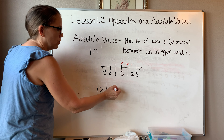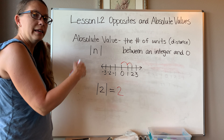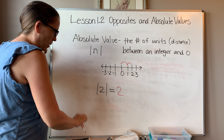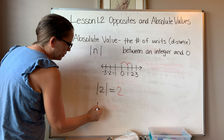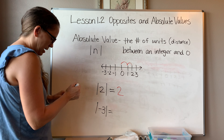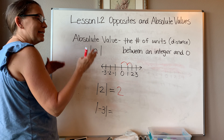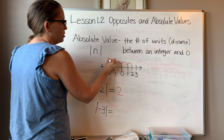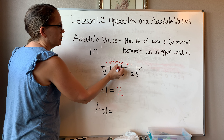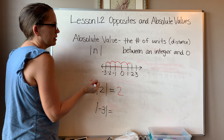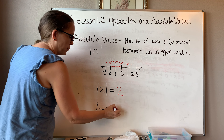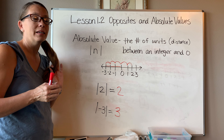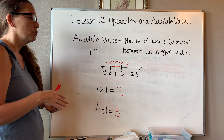The absolute value sign looks like two long vertical lines with a number in between — they're long so you know they're not ones. If I ask you for the absolute value of two, it means the distance it is from zero. Starting at zero, how many jumps does it take to get to two? It takes two jumps, so the absolute value of two is two. Once you have the answer, the lines are gone.